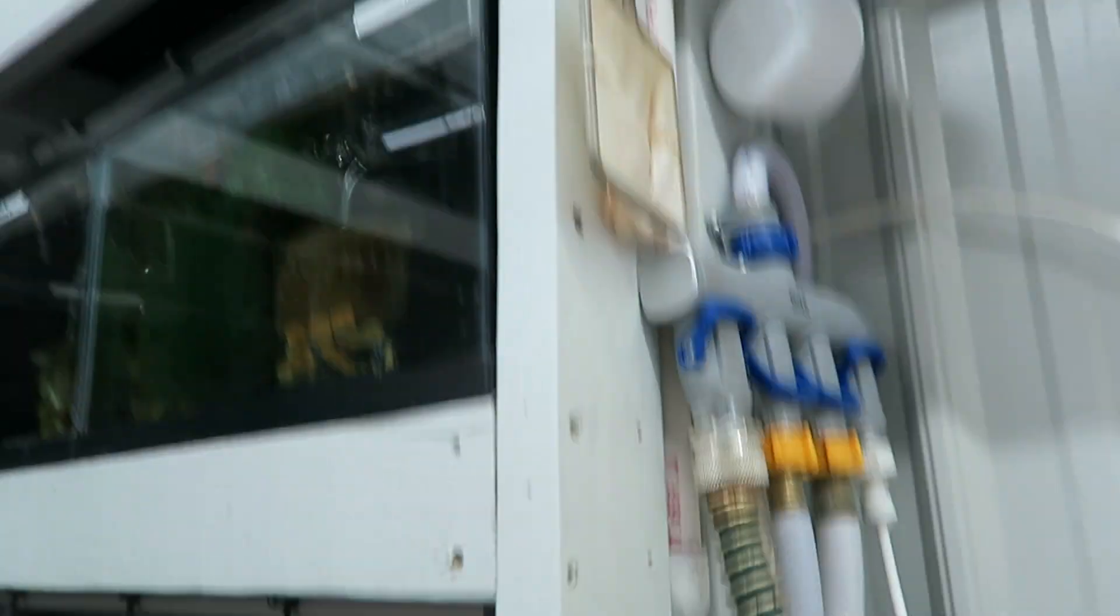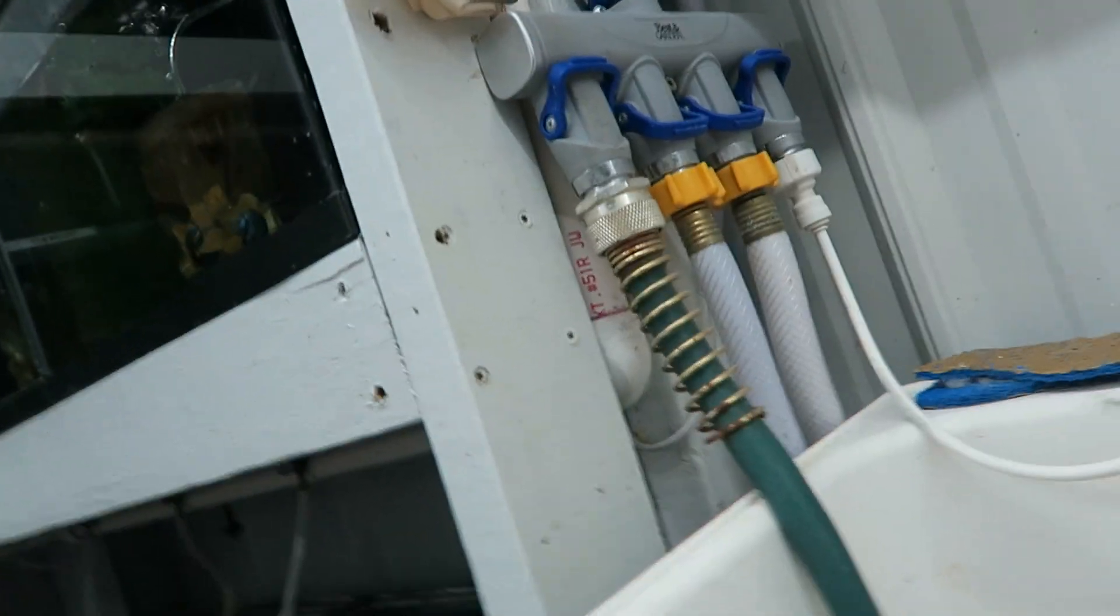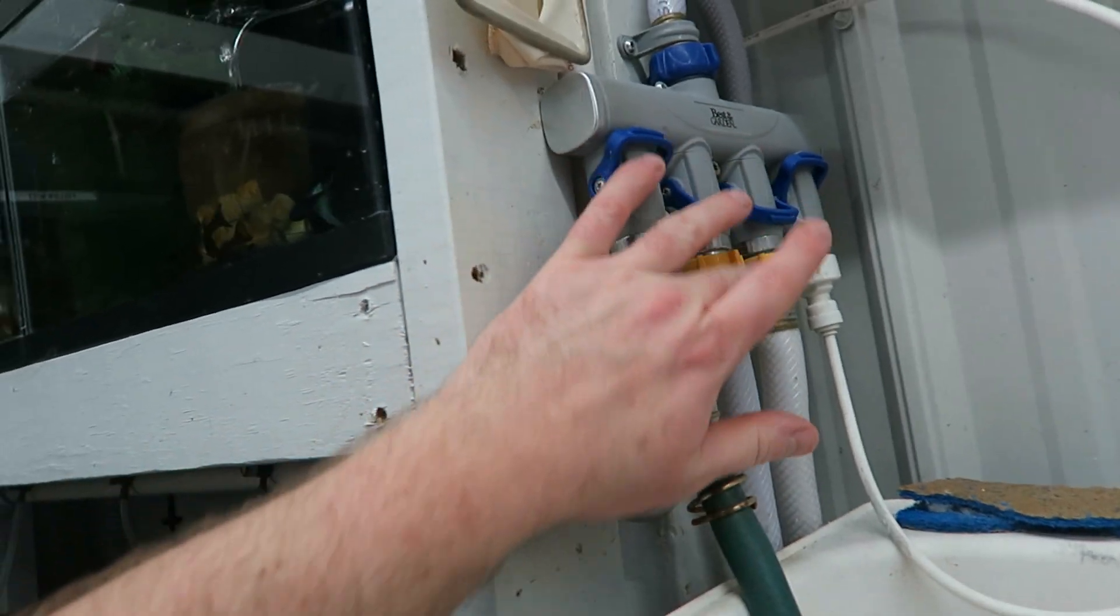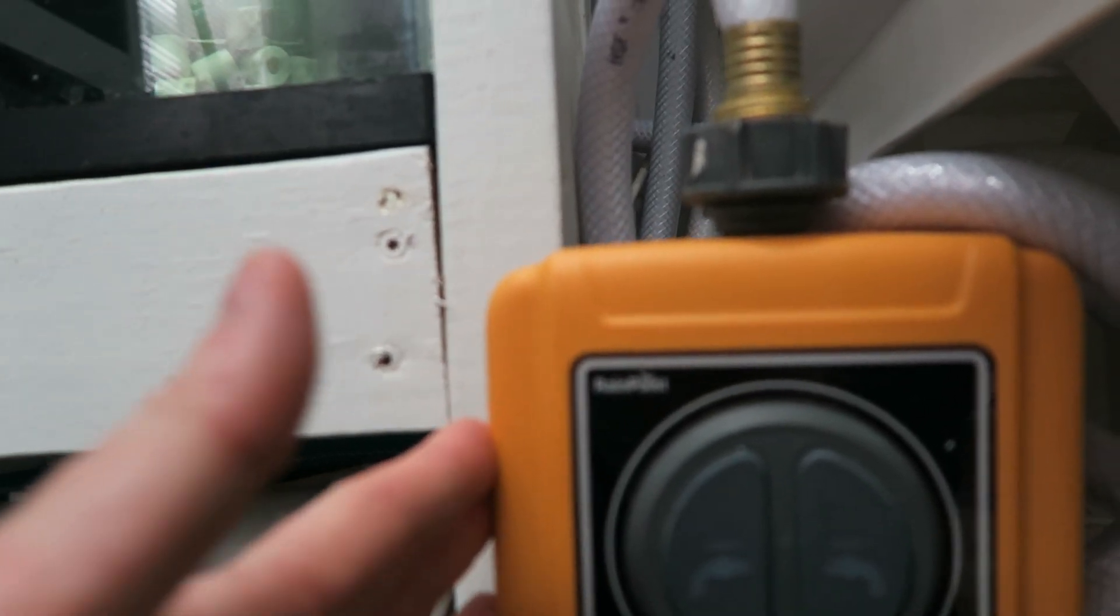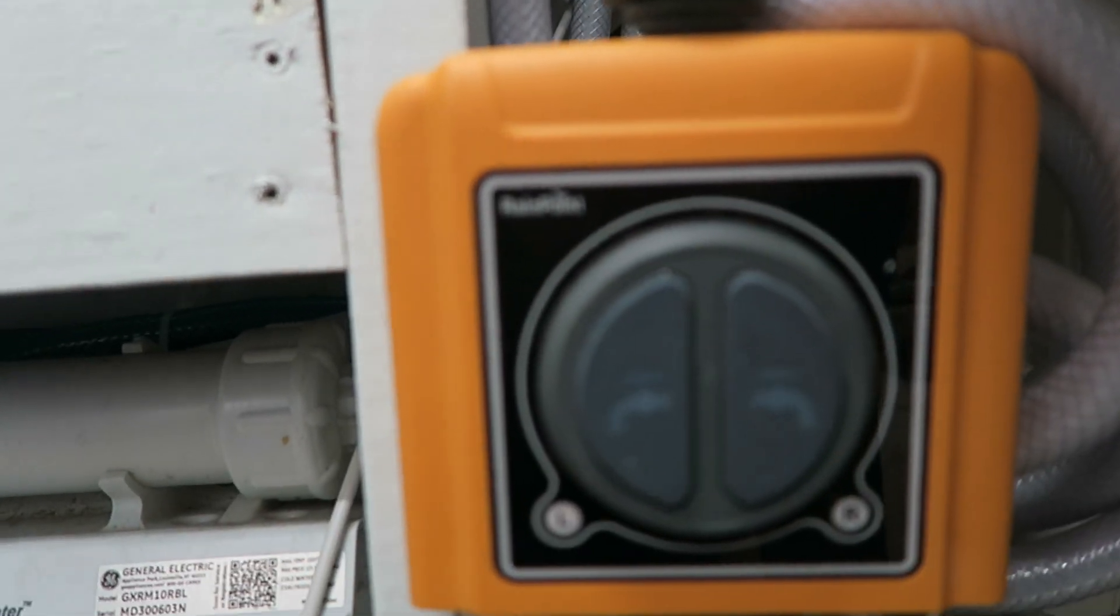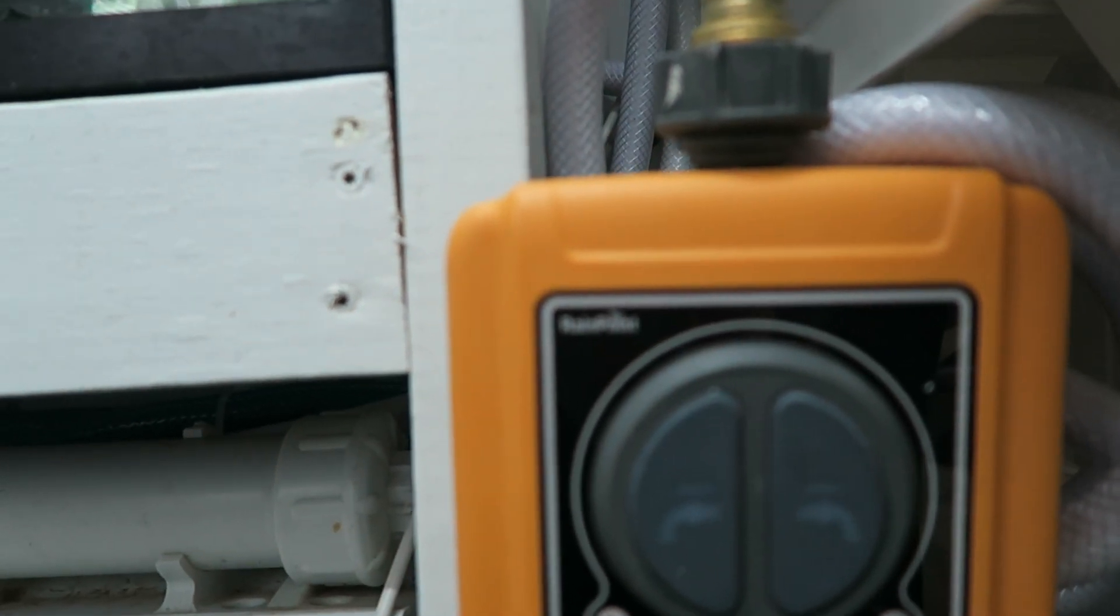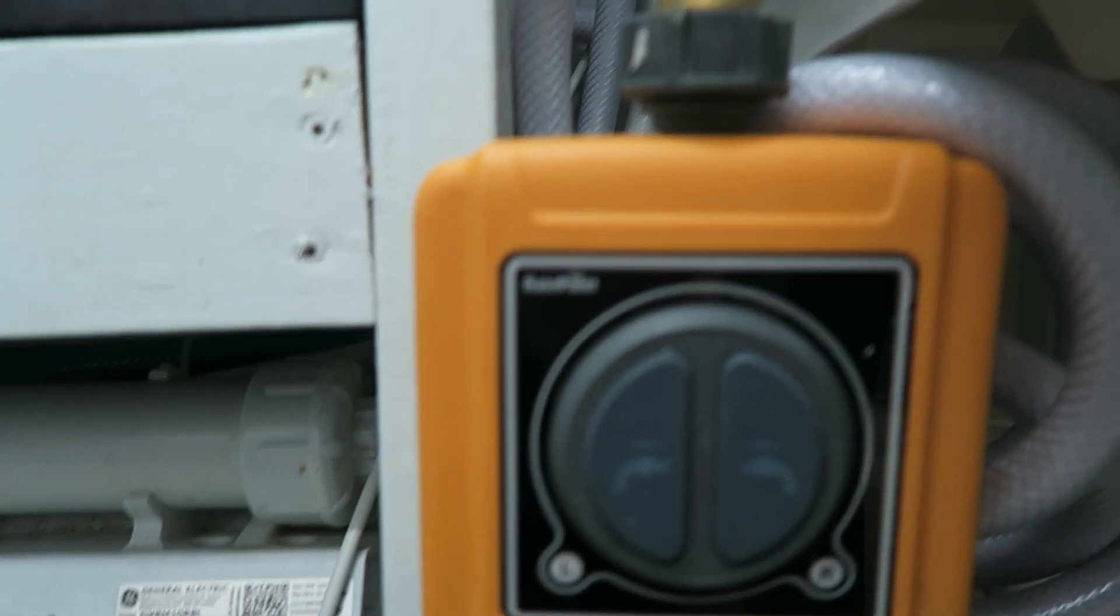A splitter to go to different zones or different things I'm doing, and then each zone you can come on down and I have it going to these, which are Rain Point irrigation controllers. This particular one's a smart controller I can control from my phone.